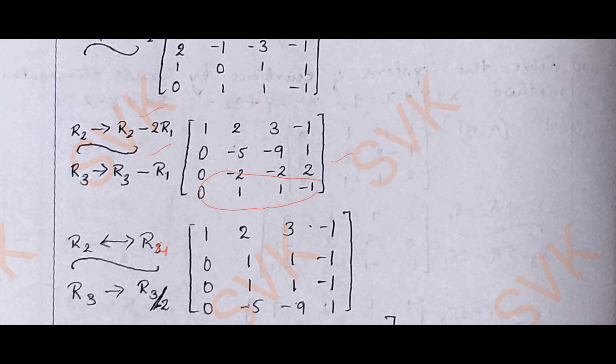And as we have common divisibles in R3, I am dividing R3 by minus 2. We are left out with 0, 1, 1, minus 1.